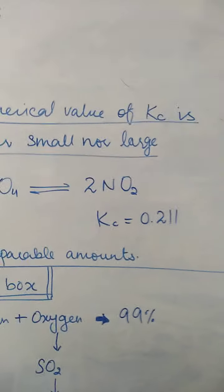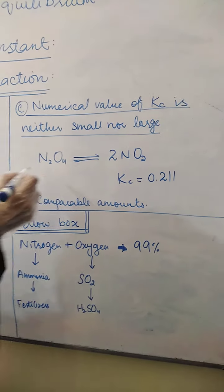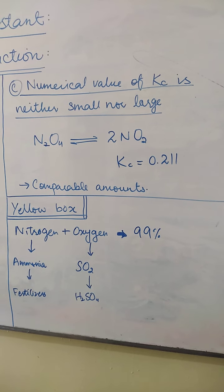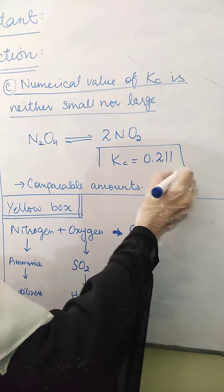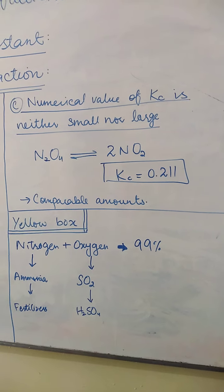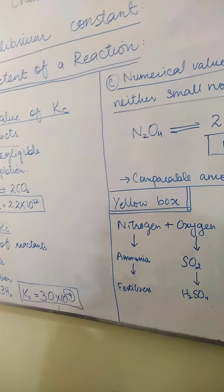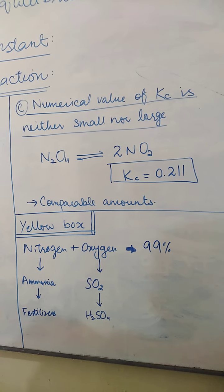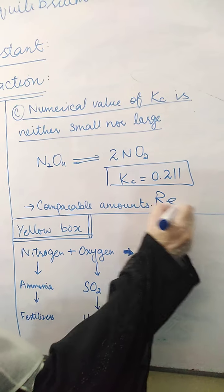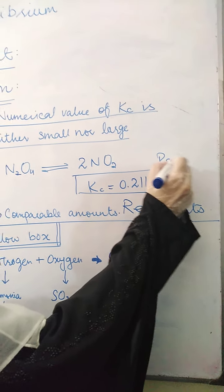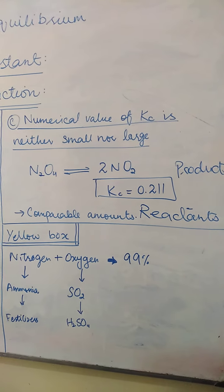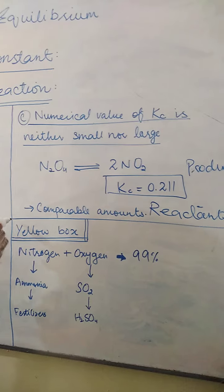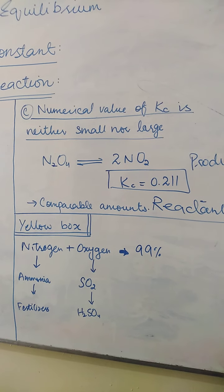The third condition is when the numerical value of Kc is neither small nor large. For example, N2O4 decomposes to produce NO2 (nitrogen dioxide), and the Kc value is 0.211. This is not very large like 10²², nor very small like 10⁻⁹. In such conditions, comparable amounts of reactants and products are present at equilibrium — sometimes one will be slightly more, sometimes the other, but they are roughly comparable.